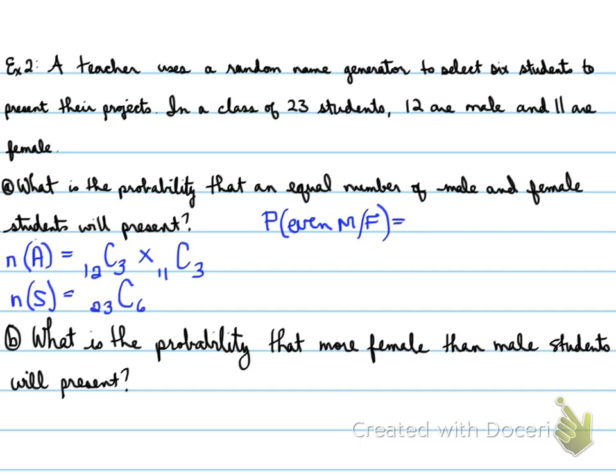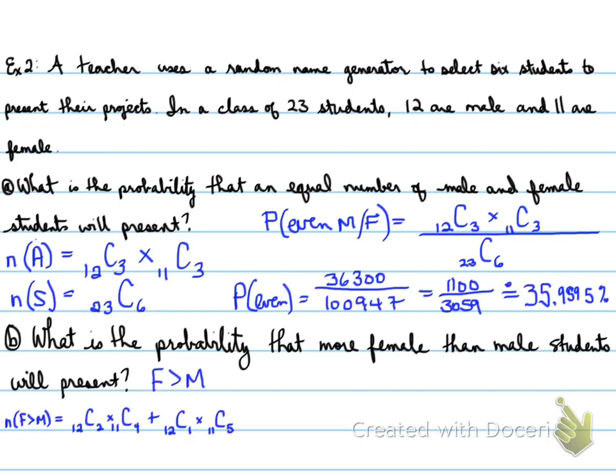Okay, now we need to calculate the probability, so we take n(A), divide by n(S), and that gives us 35.9595%.